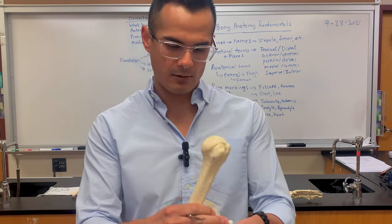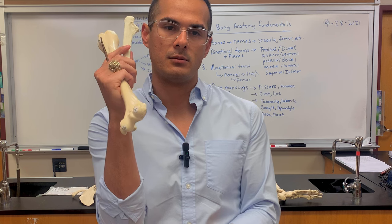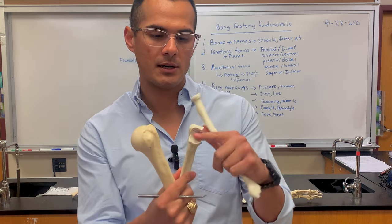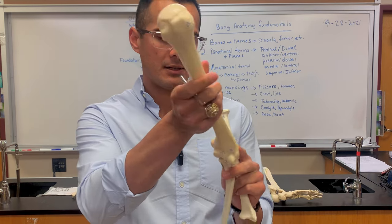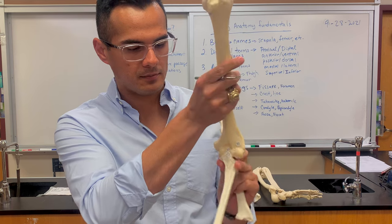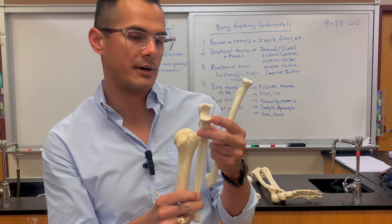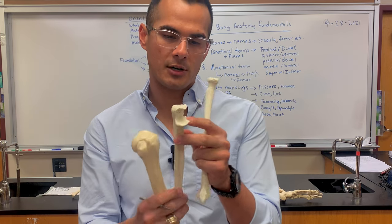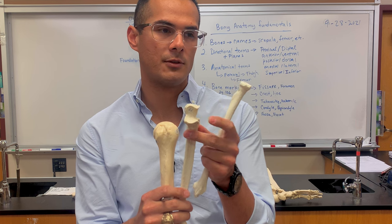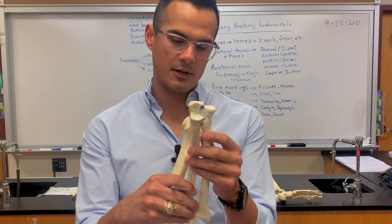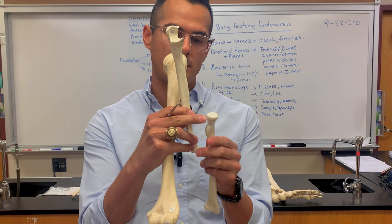Now the ulna — it articulates here, and the back part is the olecranon, which is like where your elbow is. This part is known as the trochlear notch, which articulates with the humerus because it articulates with the trochlea. Once again, that's the coronoid process. On the ulna, this is the radial fossa of the ulna because when it articulates with the radius, this is the part that receives the head of the radius.